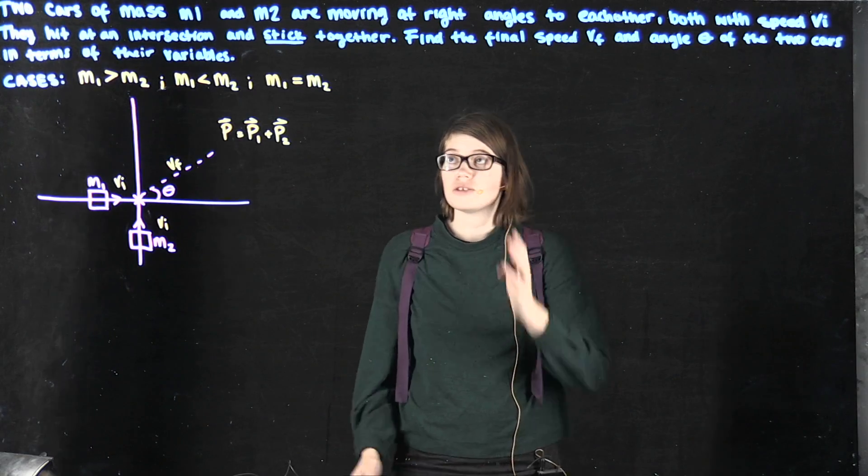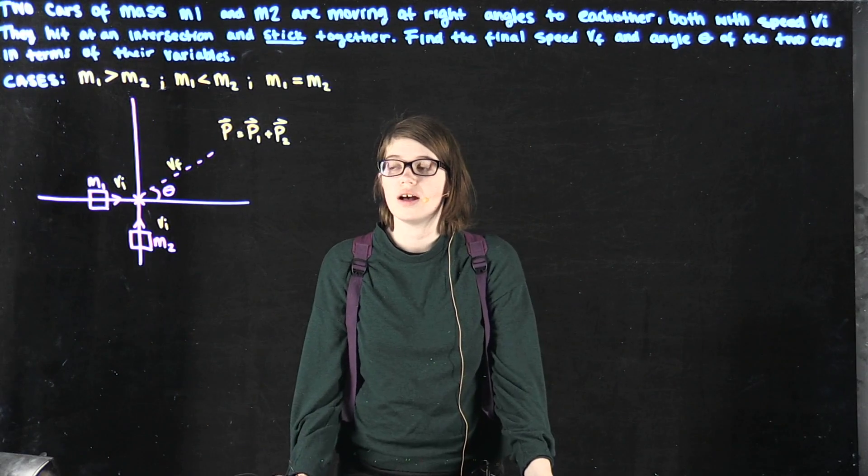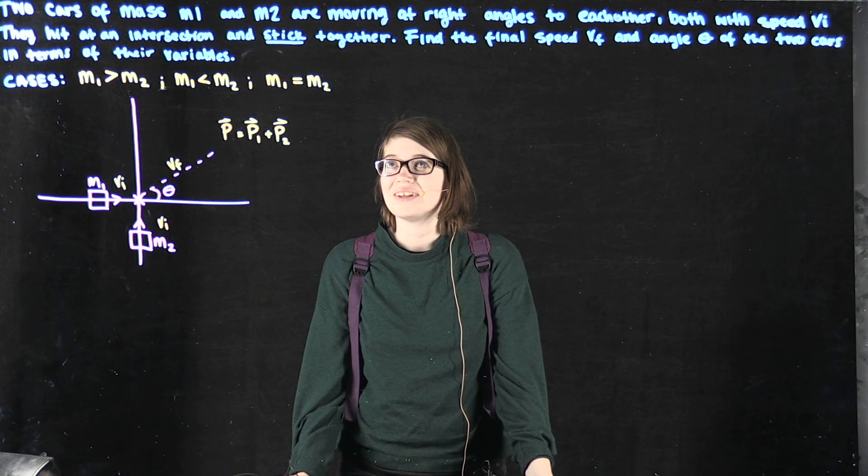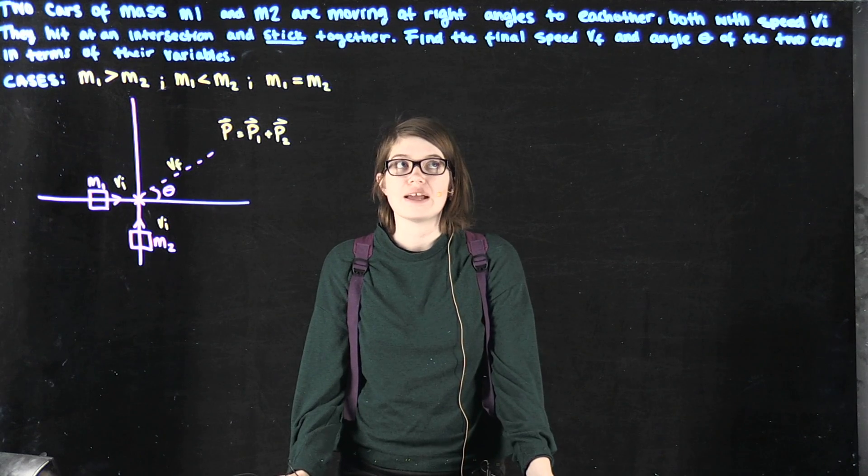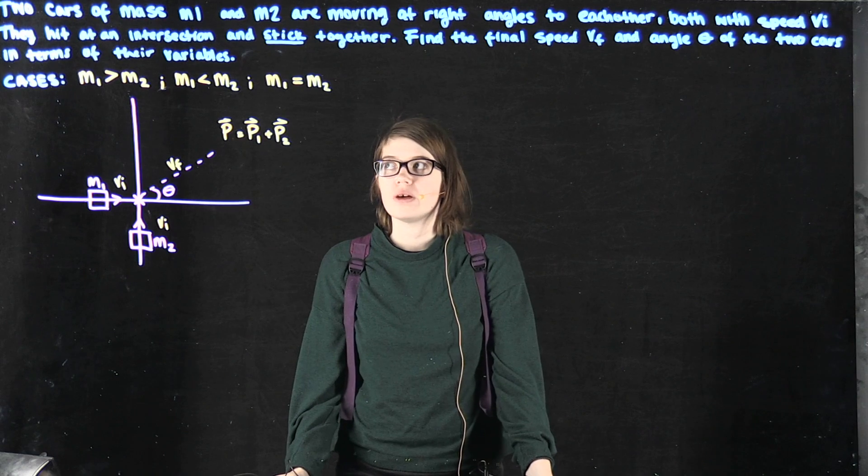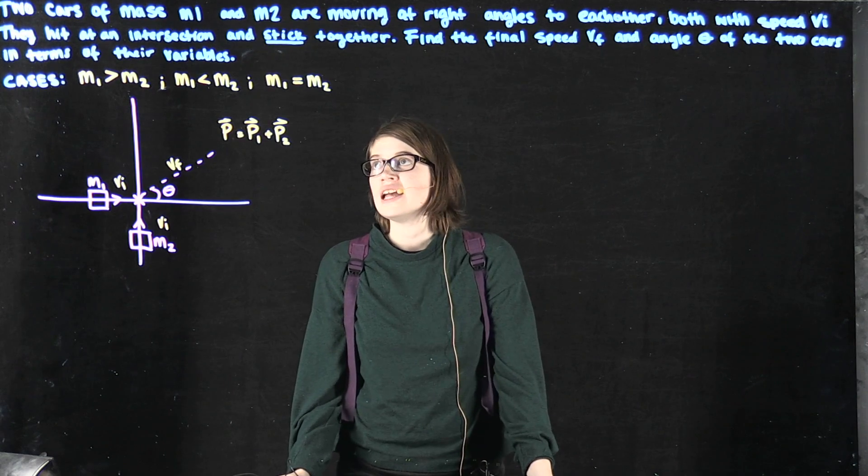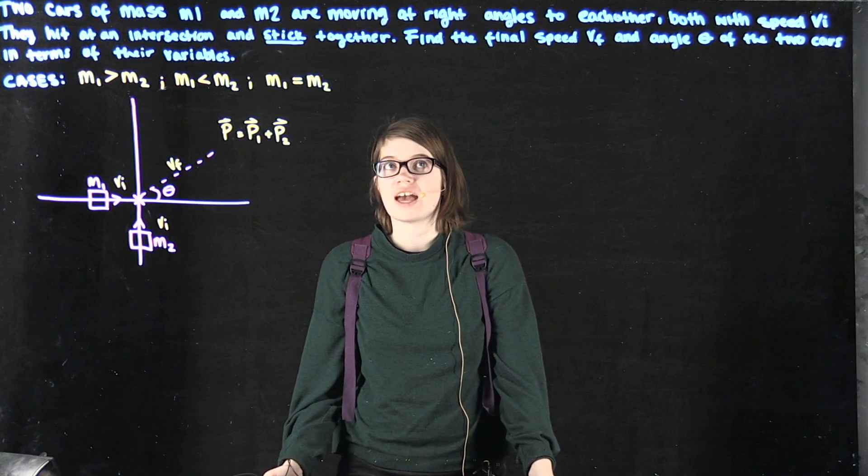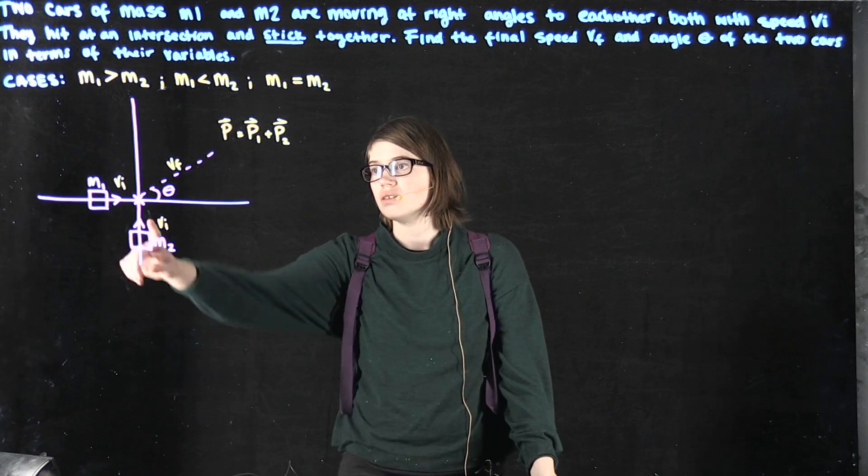Our problem is when two cars of mass m1 and m2 are moving at right angles to each other, both with speed v initial. They hit an intersection and stick together in a right angle.